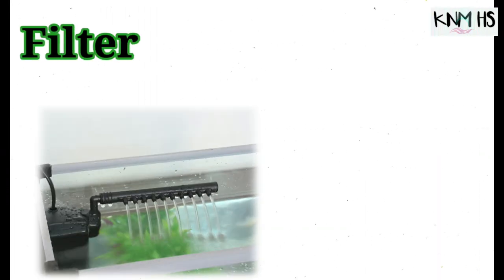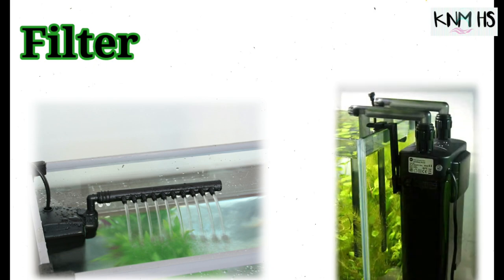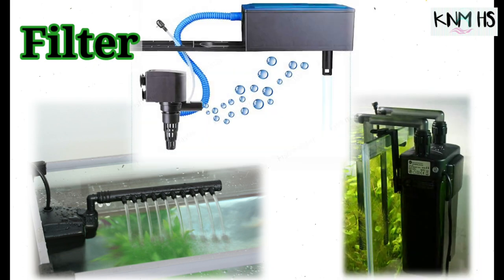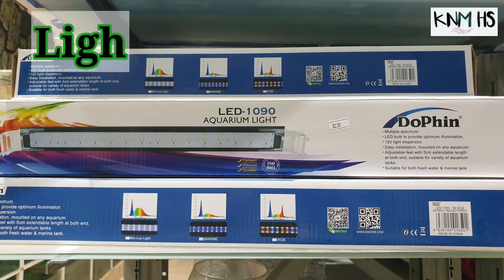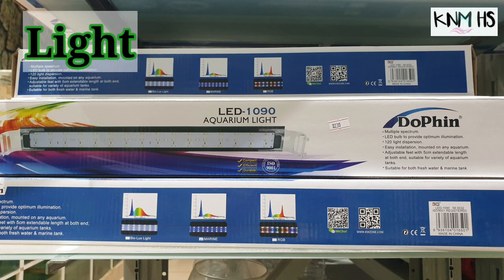A filter helps to filter excess food and fish waste and removes dangerous chemicals and bacteria. The growth and health of your plants also depends on light. However, if you are maintaining a low-tech tank, even low-voltage light will work as well.